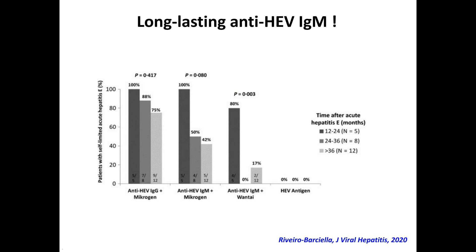I'd like to draw attention to the long persistence of IgM. In a Spanish study, the rate of IgM detection depended on the sensitivity of the assay used. Using the Mikrogen assay, IgM could be detected in nearly 40% of cases three years after the acute phase. It is less with other assays, but it can be very difficult to assess the significance of a positive IgM result when the acute phase was many months or years ago.